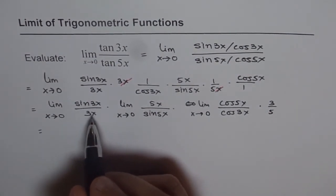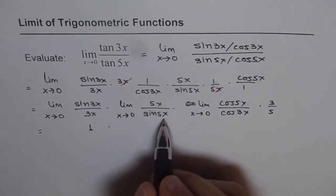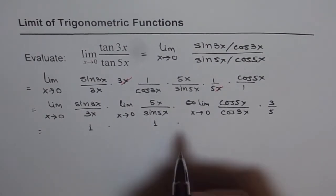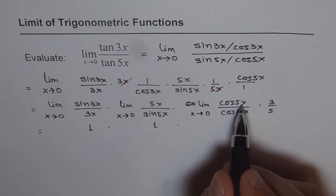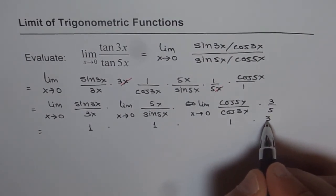You know the limit of sin 3x over 3x is just 1. So we can write this as 1 times limit of 5x over sin 5x when x approaches 0, which is also 1. And here, cos of 5x, if I plug in 0, cos of 0 is 1. Cos of 3x, limit x approaching 0 is also 1. So this is also 1. And this number is 3 over 5.